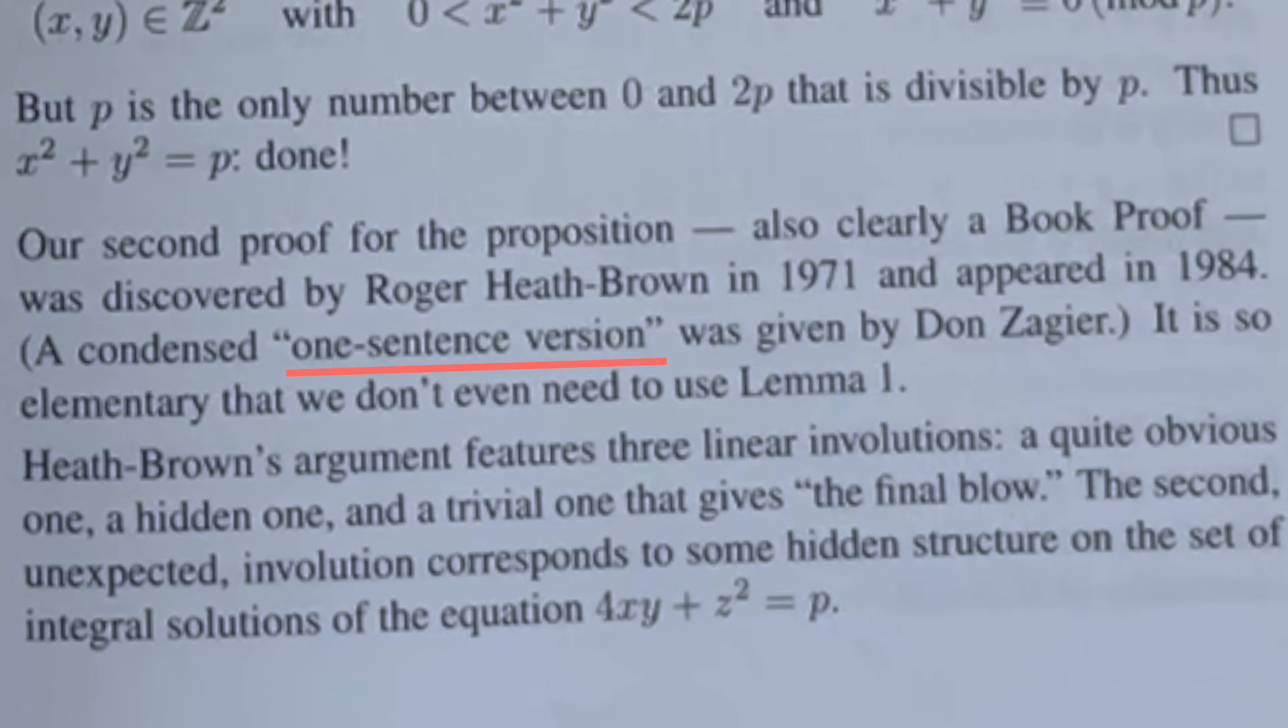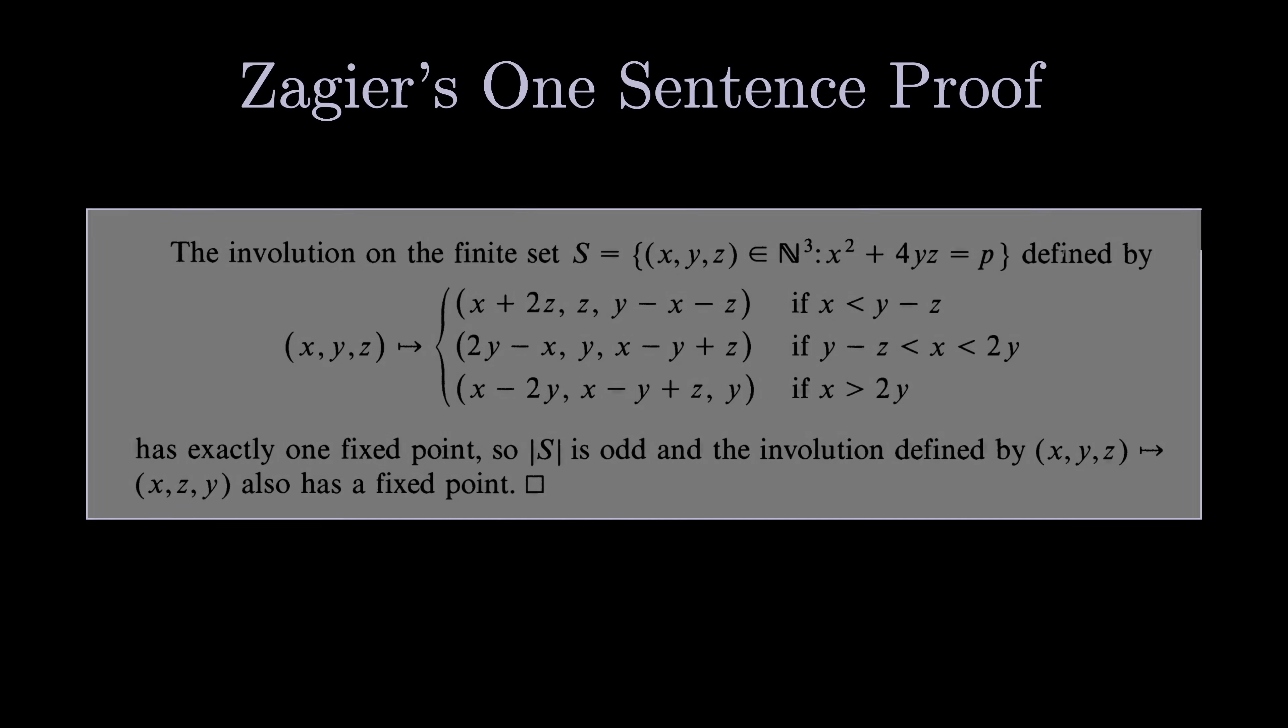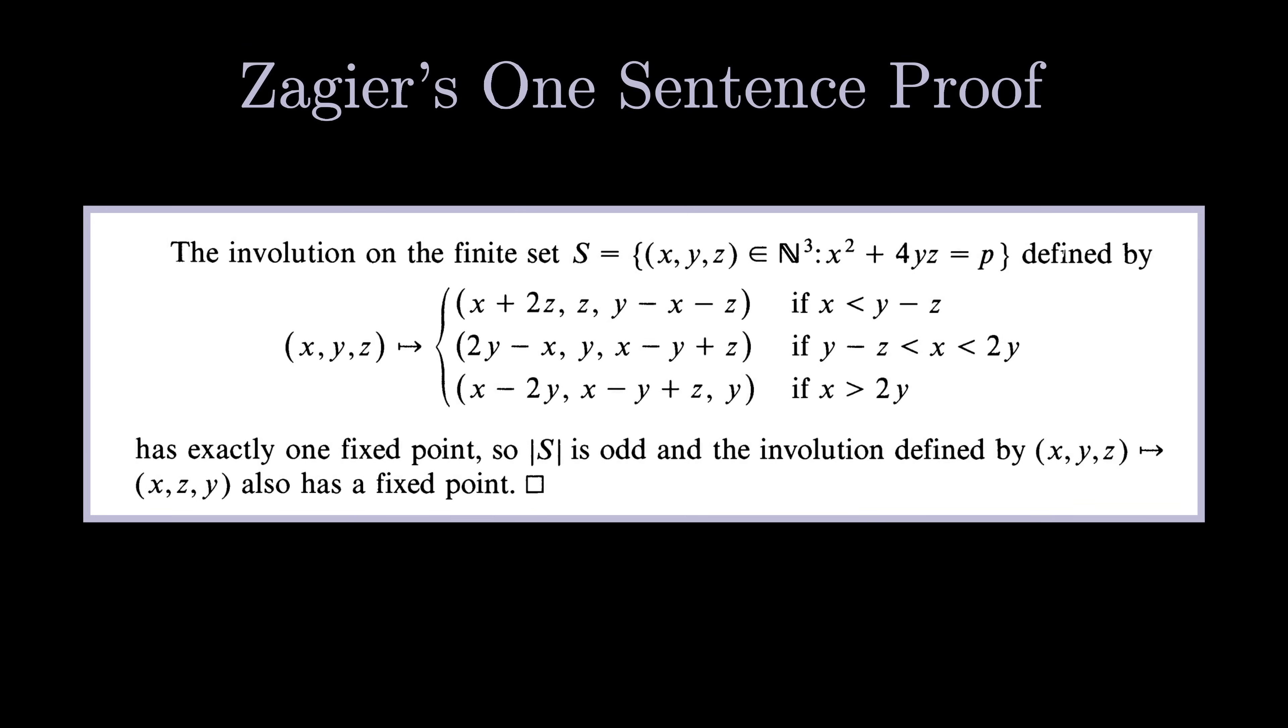If we go down a bit, the book refers to a one-sentence proof of this theorem, and this proof is well, mind-boggling. I certainly had no idea where to begin when I first read it, but if we unpack each word and what it's saying, it comes together beautifully. I feel like it hits every single aspect of beauty I mentioned in the beginning.